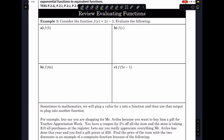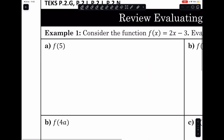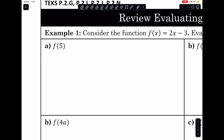Let's consider the function f of x is equal to 2x minus 3, and let's evaluate f of 5. To evaluate f of 5, we simply replace the x value with 5 and then simplify by following order of operations. So this becomes 10 minus 3, which is 7.